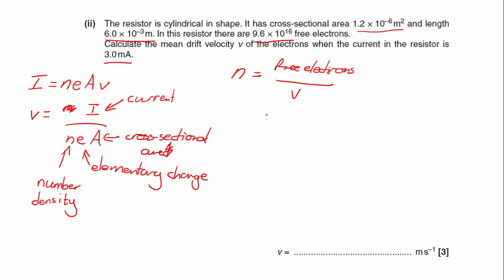So n is going to equal 9.6 times 10 to the 16 divided by my volume, which is the cross-sectional area 1.2 times 10 to the minus 6 multiplied by 6 times 10 to the minus 3. Now we can put this into our formula.